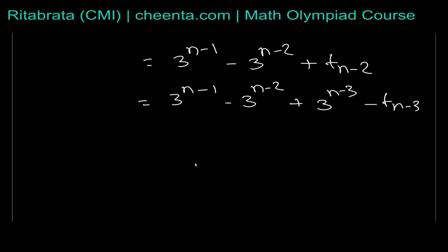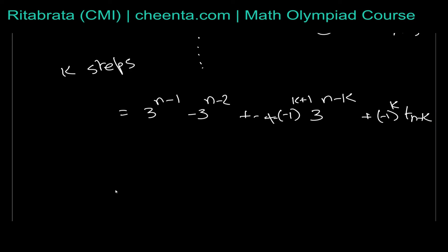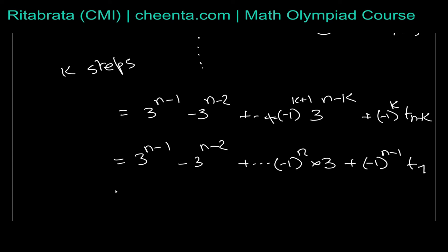After k steps of iteration, the pattern shows that the coefficient of t_{n-k} alternates in sign: for odd k it is positive (+1) and for even k it is negative, giving the term (-1)^{k+1} · t_{n-k}, while the 3^{n-k} terms carry sign (-1)^k. Setting k equal to n minus 1 to reach the base case t_1, we get t_n equals 3^{n-1} minus 3^{n-2} plus ... plus (-1)^n · t_1, and since t_1 equals 0, that last term vanishes.